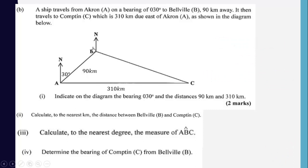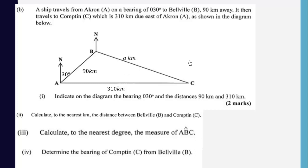We are supposed to calculate, to the nearest kilometer, the distance between B and C. This is not a right-angle triangle, so we can use the cosine rule. The included angle at A works out to be 60 degrees. Let the distance BC be A kilometers. By the cosine rule: A² = B² + C² − 2BC·cos(A).